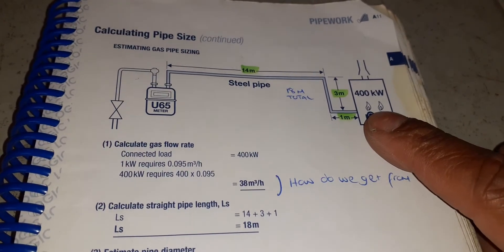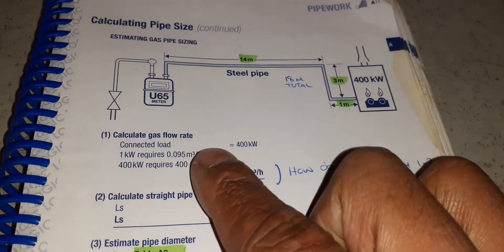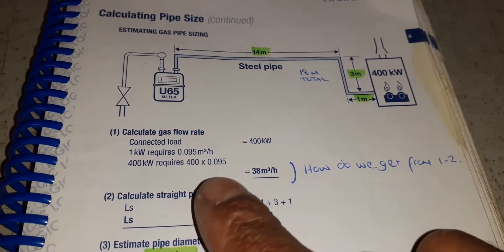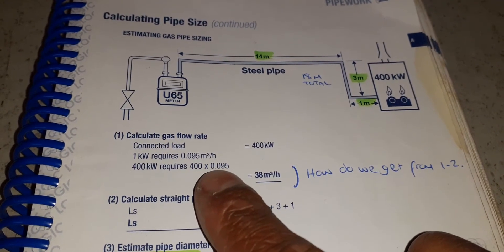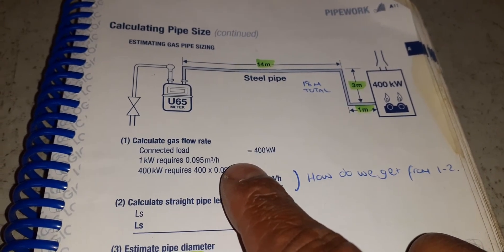As you can see in this book here, it says calculate gas flow rate. Connected load: one kilowatt requires 0.095 meters cubed an hour of gas.